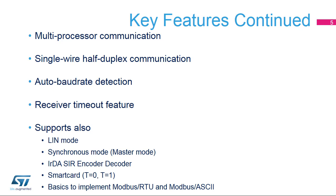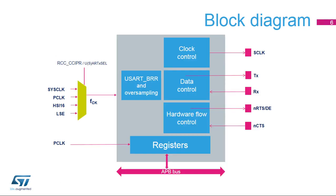The USART also offers many other features, including auto-baud rate detection, receiver timeout, and supports several modes, which will be described later in the presentation.